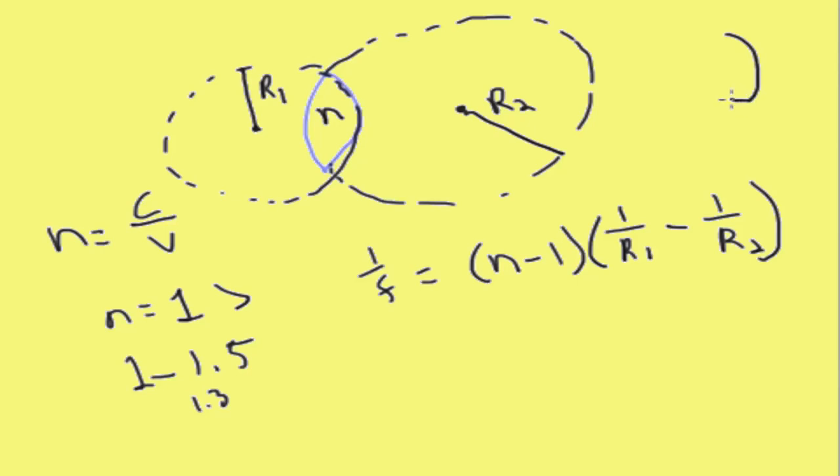So a lens that would have two positive radii of curvature would look like that. So in the case of what I've drawn here for a convex lens, the second radius of curvature over here would end up being negative. So this would be the sum of these two.